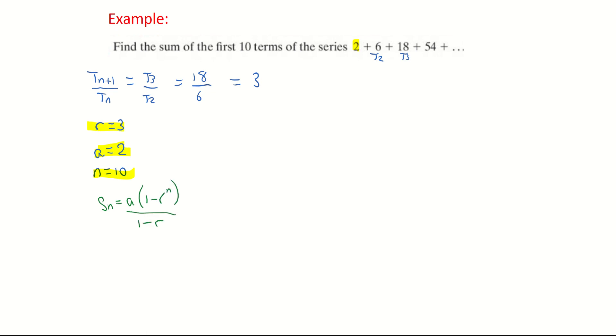Filling in my formula now, the sum of the first 10 terms is equal to A which is 2, times 1 minus R, R being my ratio of 3, to the power of N which is 10 in this case, and I'm dividing that all by 1 minus R which is 1 minus 3.